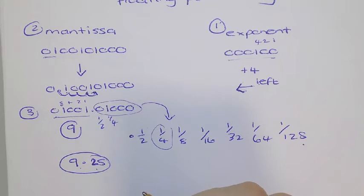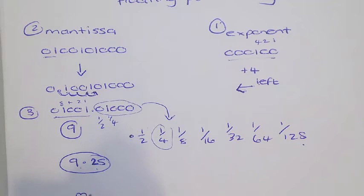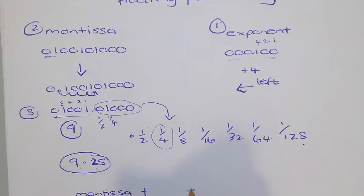Now, that is an example where both the mantissa was positive, and the exponent was positive. I'm going to show you how to do negative numbers in the next video.